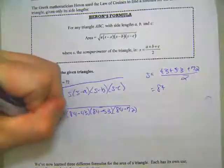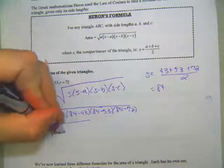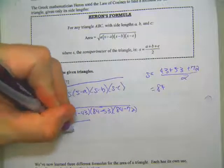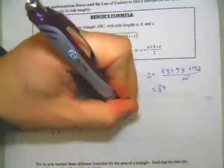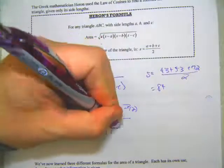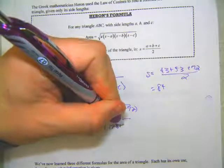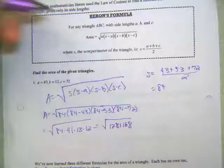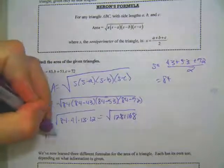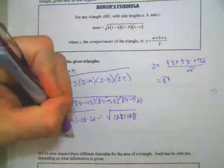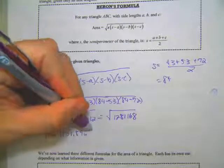Well, that would be 84 times 41 times 13 times 12, which is the square root of this gigantic number, 128,100. Oh, no, I guess it's 1,281,168. If you take the square root of that, you get 1,131.89 square units.